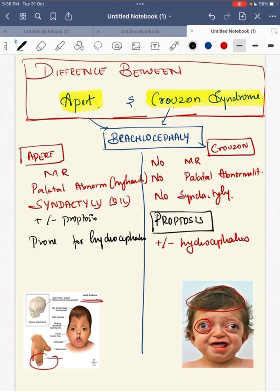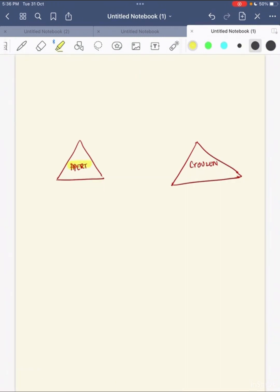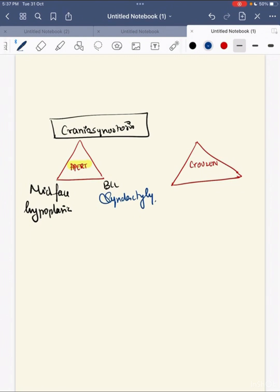So these are the main differences between Apert and Crouzon syndrome. The triad of Apert syndrome is craniosynostosis. I will take a separate topic on this craniosynostosis in a separate video. Next, they will have midface hypoplasia and bilateral syndactyly. This is the triad of Apert.